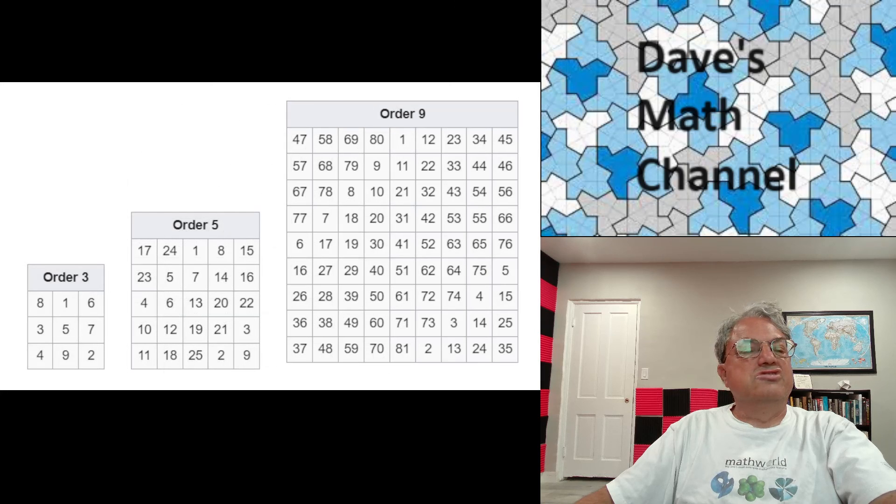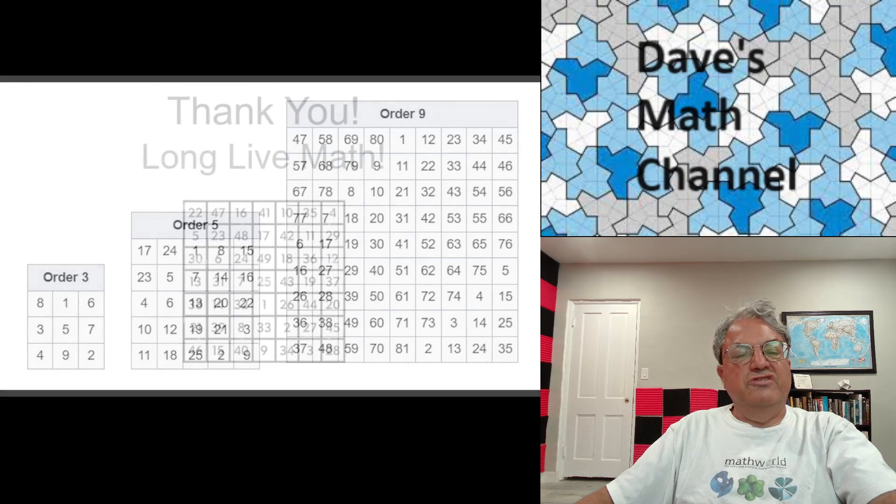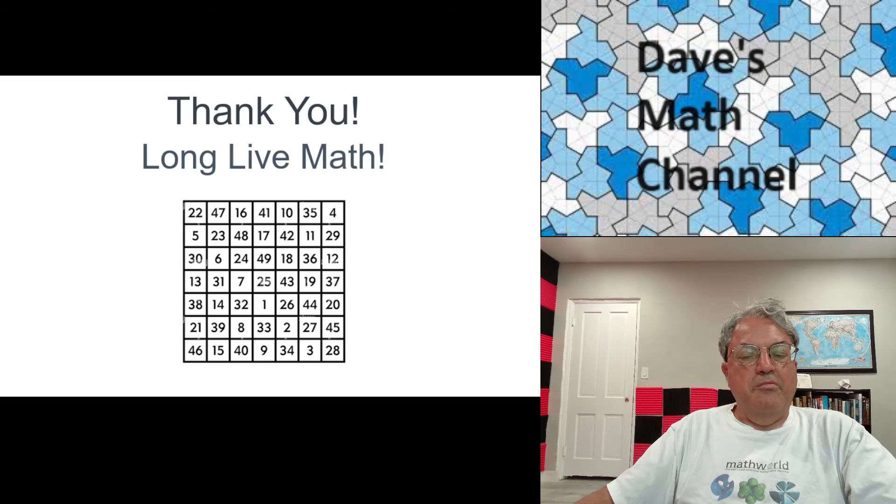And here's what you get for order 3, order 5, and order 9. So you can do whatever order you want. And I just think it's a nice method. And anyway, that's my video for today on how to construct magic squares of odd order. I hope you enjoyed it. Thank you for watching. Long live math. And I'll see you guys next time. Bye.